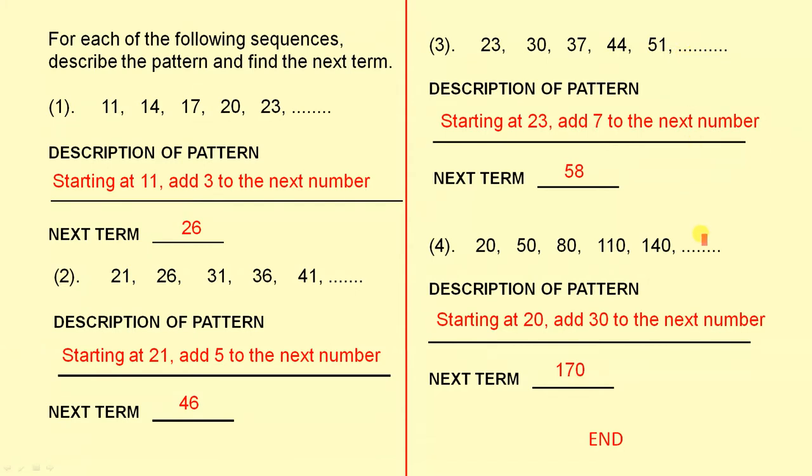And finally, the description of the pattern: starting at twenty, add thirty to the next number. So the next term is one hundred and seventy, because one hundred and forty plus thirty is one hundred and seventy.